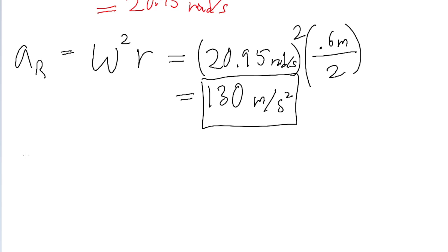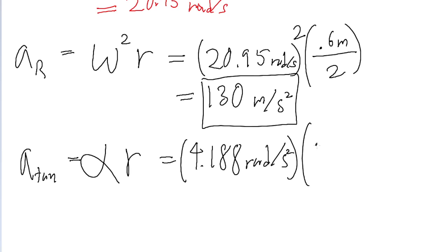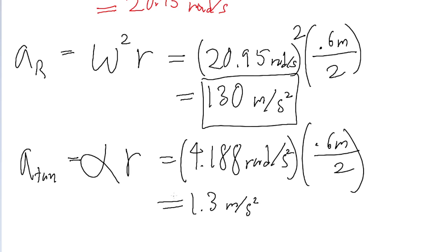Now let's use our formula for tangential acceleration. The tangential acceleration equals the angular acceleration multiplied by the radius. We found the angular acceleration earlier as 4.188 radians per second squared, multiplied by the radius of 0.61 meters divided by 2. Putting that into a calculator gives us 1.3 meters per second squared.